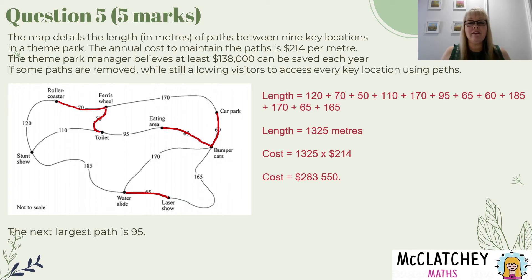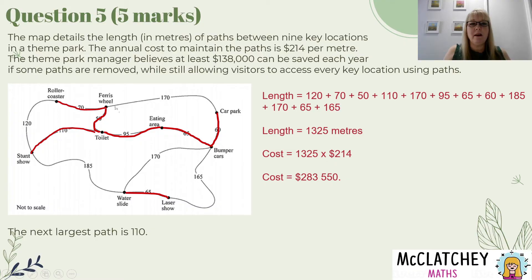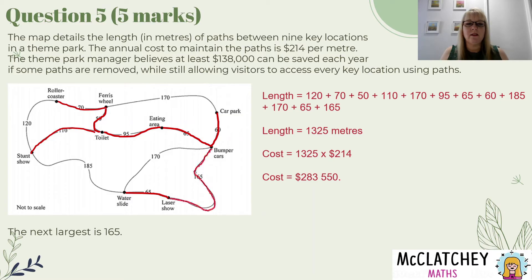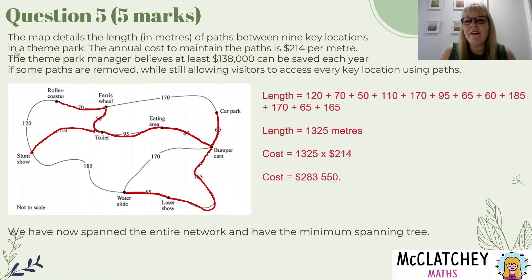The next path is 95, connecting the toilet to the eating area. I've almost connected all locations — just the stunt show left to reach. The next number after 95 is 110, so I draw that pathway in. I don't need to add any other paths because adding them would create loops — for example, Ferris wheel to car park would make a loop. But we still need to reach the water slide and laser show, so the next largest value is 165, which connects them at the bottom. Now I've reached every location — any other paths would create loops. We've spanned the entire network and have a minimum spanning tree.